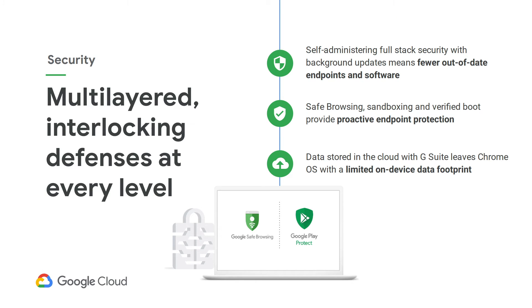Let's take a look at the factors that contribute to these savings, starting with security. With Chromebooks and Chrome Enterprise, automatic updates ensure devices never fall out-of-date and always have the latest security features. Safe browsing deters users from visiting dangerous sites that may include malware or phishing attempts. Sandboxing isolates tabs and processes if a vulnerability does get through. And verified boot ensures the OS is a known safe version every time the device starts. Since data and profiles are stored in the cloud with G Suite, Chromebooks can maintain a negligible on-device data footprint.